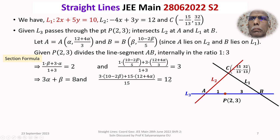For the y-coordinate, (1 times the y-coordinate of B plus 3 times the y-coordinate of A) by 4 equals 3. Substituting the expressions for the ordinates and taking LCM as 15, we get (3 times (10 minus 2 beta) plus 15 times (12 plus 4 alpha)) divided by 15 equals 12. After simplification, this gives the second equation: 10 alpha minus beta equals minus 5.